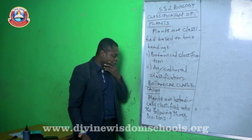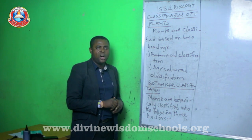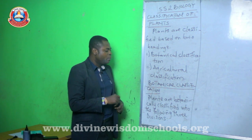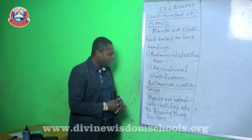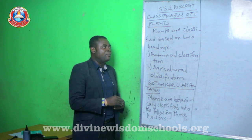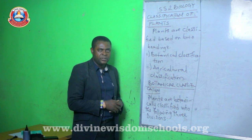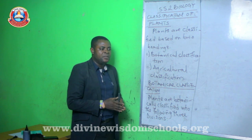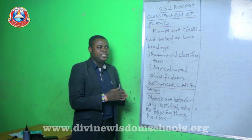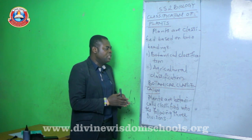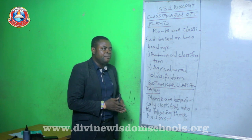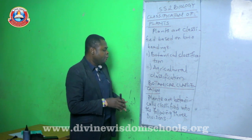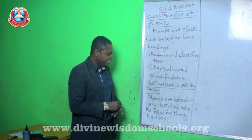When you did classification in SS1, you were told that there was a man called Carolus Linnaeus. He did pioneering work in classification and established seven hierarchies. In zoology, these include the kingdom, phylum, class, order, family, genus, and species. But in botany, we have kingdom, division, class, order, family, genus, and species. So what represents phylum in zoology is called division in botany.